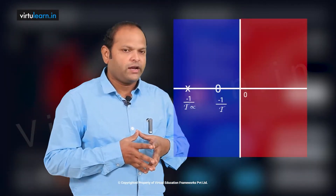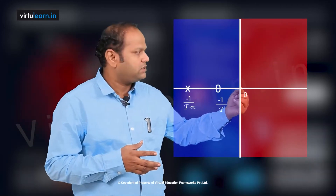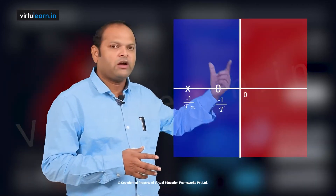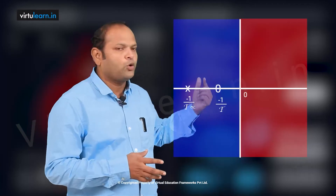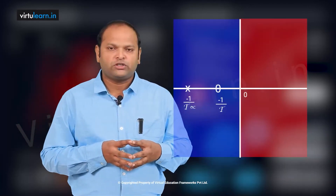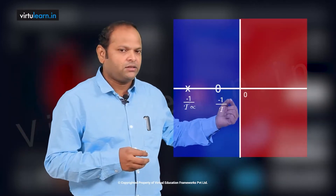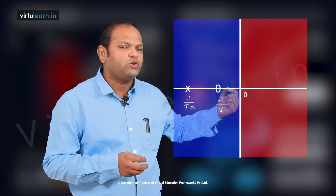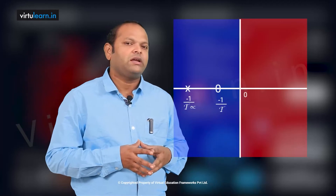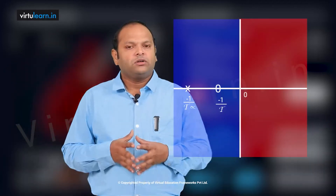In the S-plane, the zero is at minus 1/τ and the pole is at minus 1/ατ. Since the zero is nearer to the imaginary axis than the pole, we call it a lead compensator.